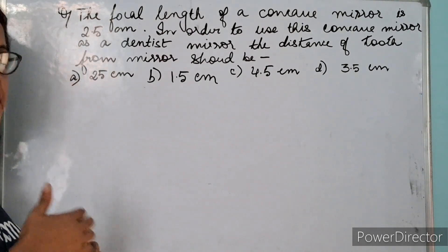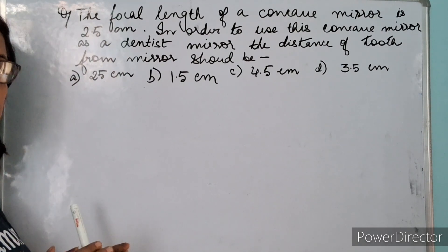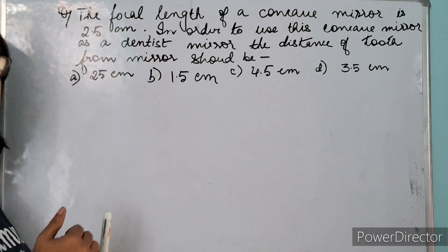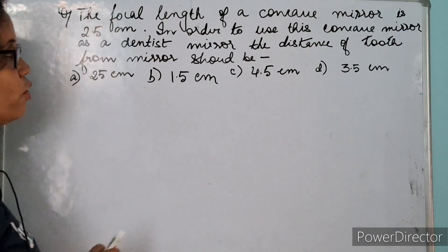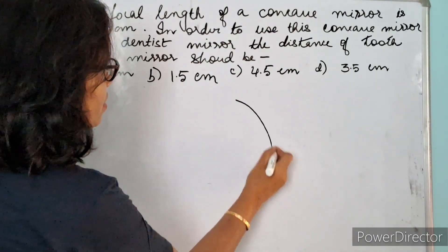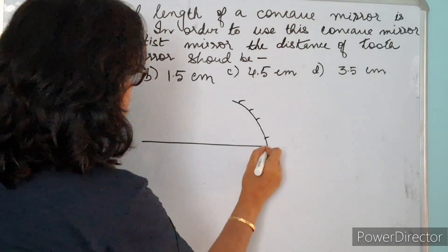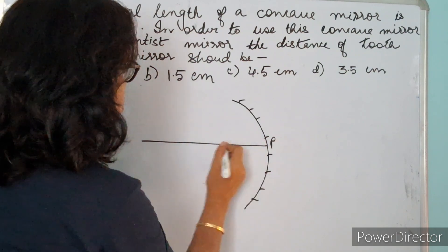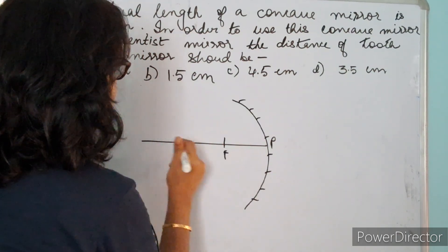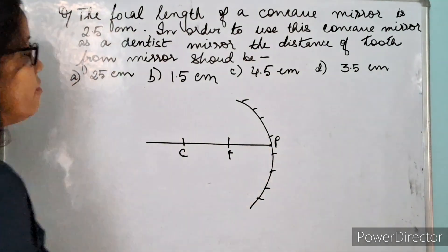We know that in case of a concave mirror, a magnified and erect image is formed only when the object is placed between the pole and the focus. Suppose we have a concave mirror here which the dentist is using. This is the principal axis. Here we have the pole, focus, and this is the radius of curvature, this is the center of curvature.